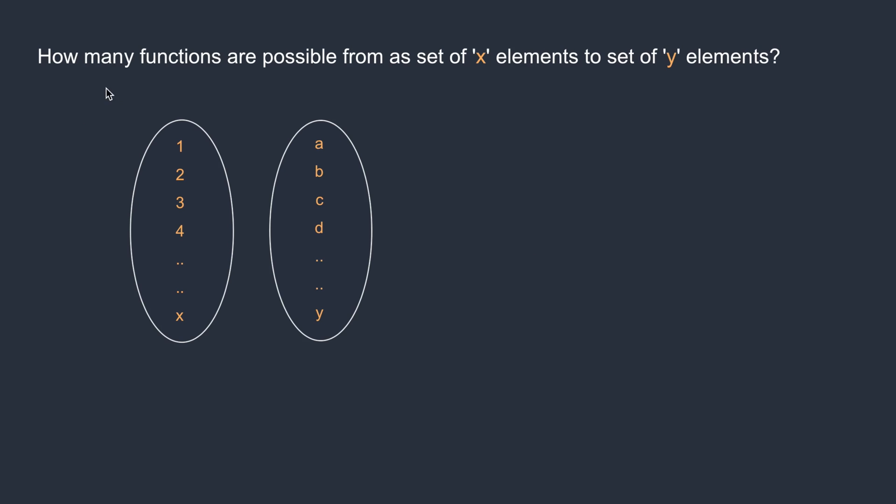Here we have a question. How many functions are possible from a set of x elements to set of y elements? To count the number of functions, basically we'll be using the basic principles of combinatorics. So if you have studied that, it becomes easy for you. Otherwise, just go through the basics of combinatorics, then come back and learn this. Here I'll be using the product rule.